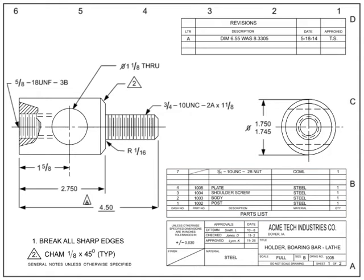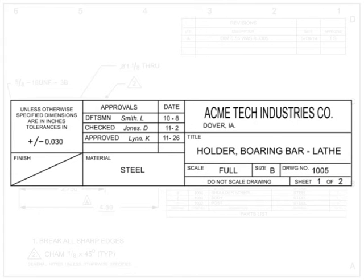The first place to look for information about a blueprint is on its title block. Most title blocks are located in the lower right-hand corner of the drawing. Although the title block information can vary by company, certain information is basic. The title block, at a minimum, contains a company's name and usually includes its logo and address.